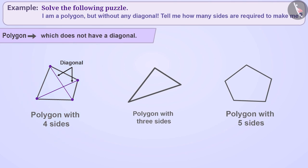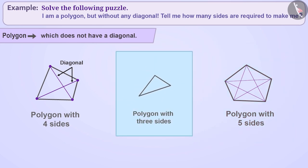Similarly, in a five-sided polygon, we can draw five diagonals. Can you tell me how many diagonals can be made in a three-sided polygon?